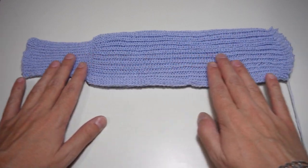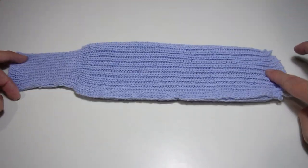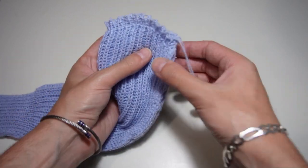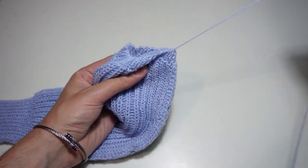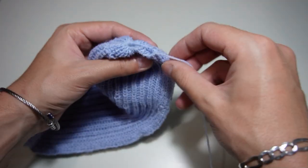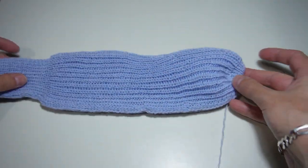After you sew it, it will look like this. Now pull the cast off tail to gather the toe part. Finally, you only need to hide the cast off tail.